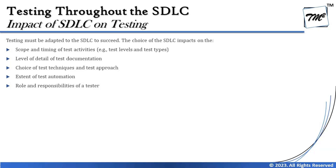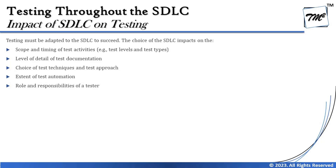The second impact is the level of detail in test documentation — waterfall produces very detailed documentation, while agile documentation is very brief. Third is the choice of test technique and test approach: whether a technique is applicable in a particular development model is important. In agile, requirements are often high-level, which restricts some black-box testing techniques, leading testers to rely more on experience-based techniques like exploratory testing.